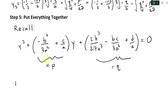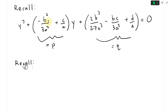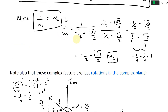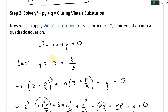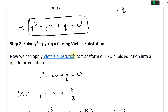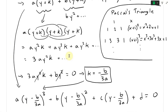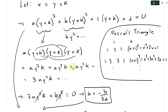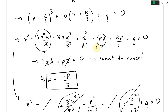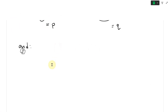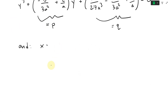Recall the value - the substitution that we used. Going all the way back up to the substitution - we use the substitution x equals y plus k, where k is equal to negative b over 3a. So in other words, x equals y minus b over 3a. Let's go all the way back down. So then we have x equals y minus b over 3a.